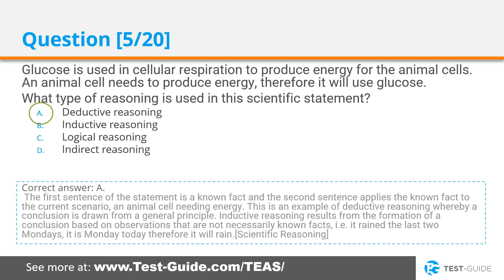Correct answer A. The first sentence of this statement is a known fact, and the second sentence applies the known fact to the current scenario — an animal cell needing energy. This is an example of deductive reasoning, whereby a conclusion is drawn from a general principle. Inductive reasoning results from the formation of a conclusion based on observations that are not necessarily known facts. For example: it rained the last two Mondays, it is Monday today, therefore it will rain.